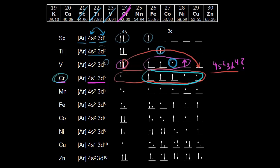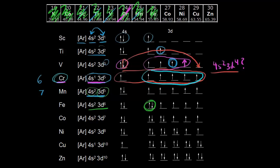Manganese has one more electron than chromium, giving [Ar] 4s² 3d⁵ — just as we'd expect going across the periodic table. Iron follows: [Ar] 4s² 3d⁶, where we begin pairing spins in the d orbitals. Cobalt is [Ar] 4s² 3d⁷, and nickel is [Ar] 4s² 3d⁸ — each adding one more electron and pairing spins following the normal trend.